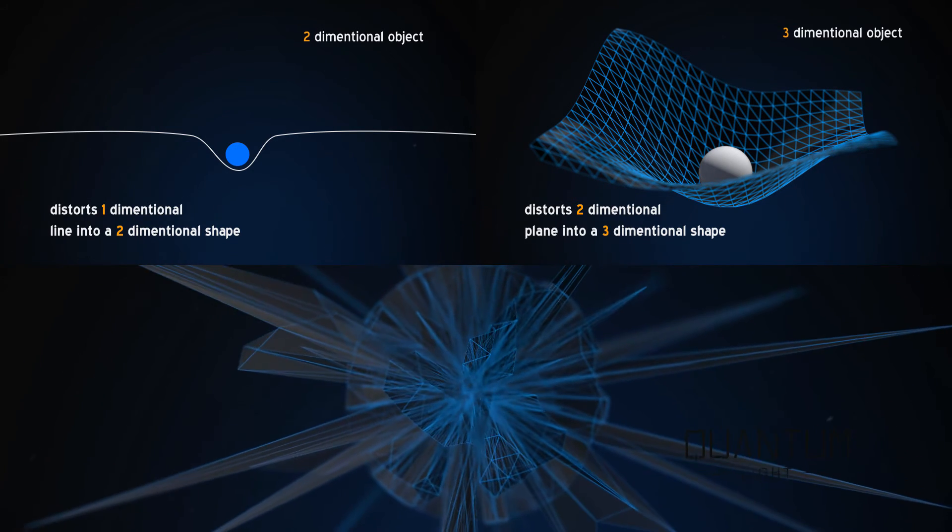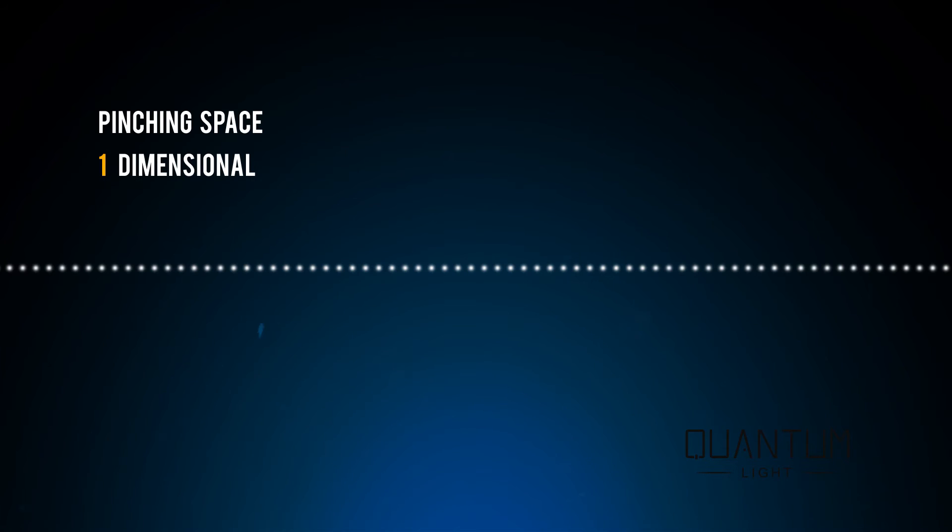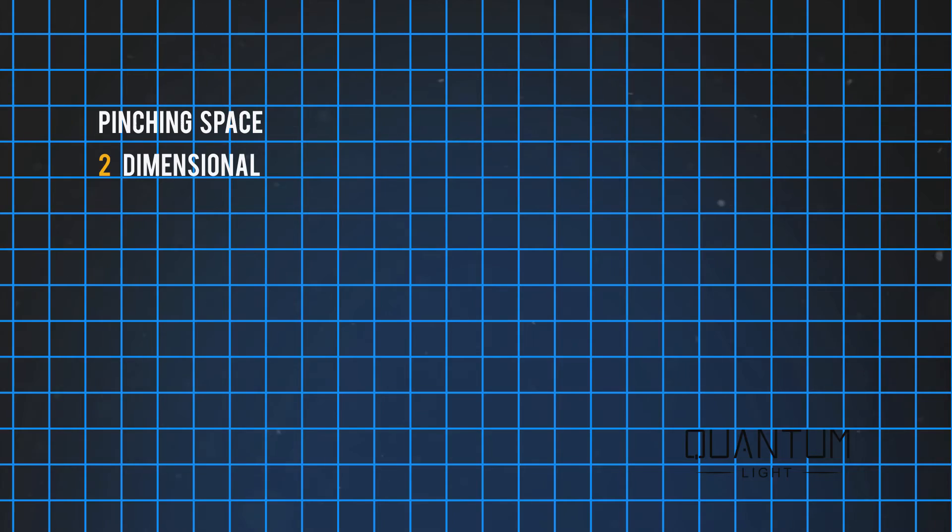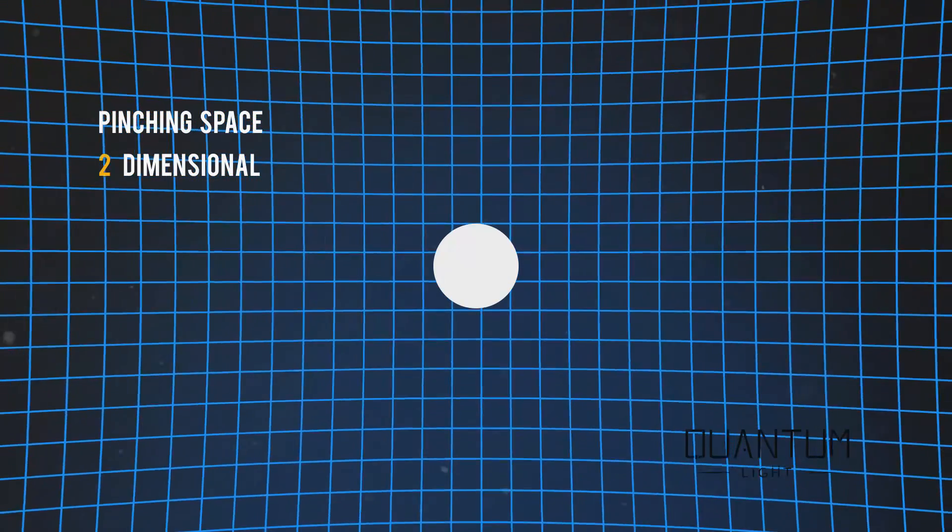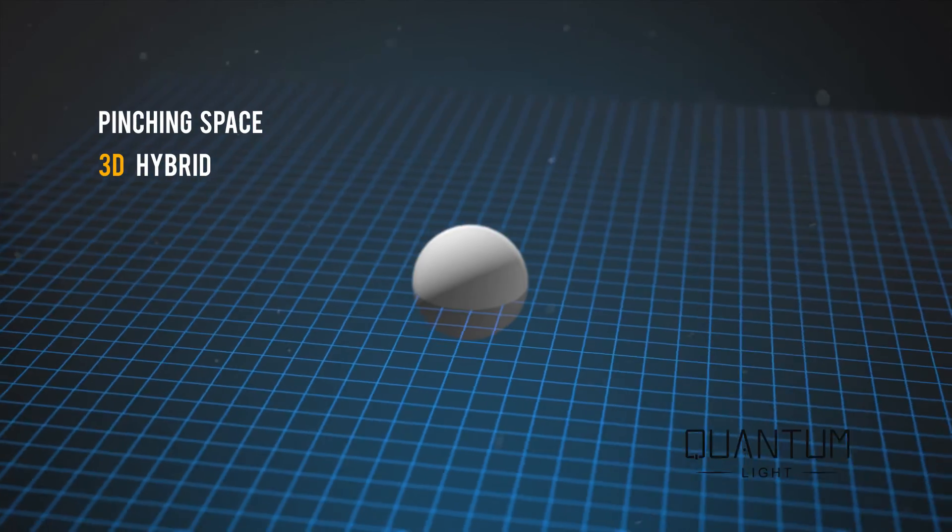In fact, you can illustrate mass warping space with a one-dimensional object distorting one-dimensional space, a two-dimensional object warping two-dimensional space, or even a hybrid 3D and 2D scenario.